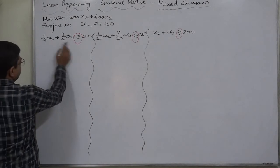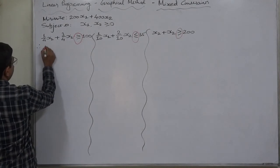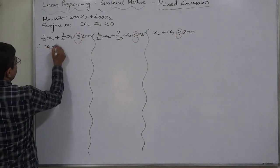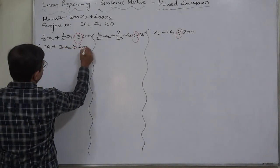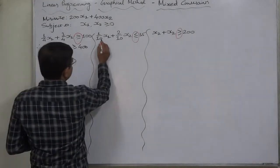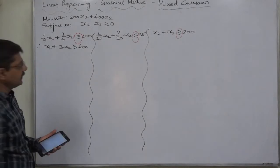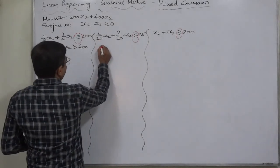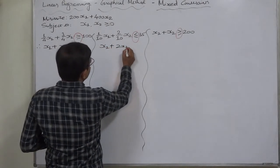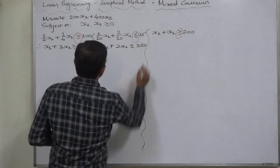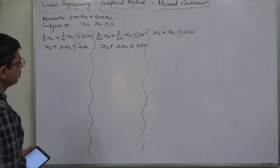First, we have to simplify the constraints. In the first constraint, 4 is the LCM, so we multiply both sides of the inequality by 4: (1/4)×4 = 1, giving x1 plus 3x2 greater than or equal to 400. In the second constraint, 10 is the LCM, so we multiply both sides by 10: giving x1 plus 2x2 less than or equal to 350.